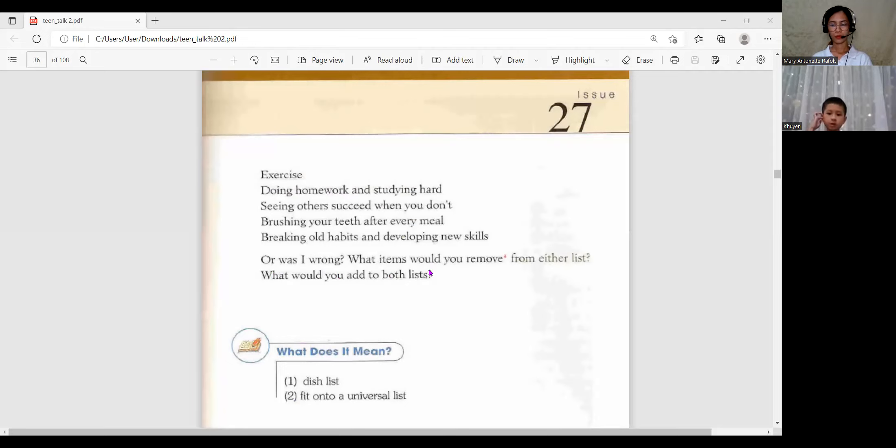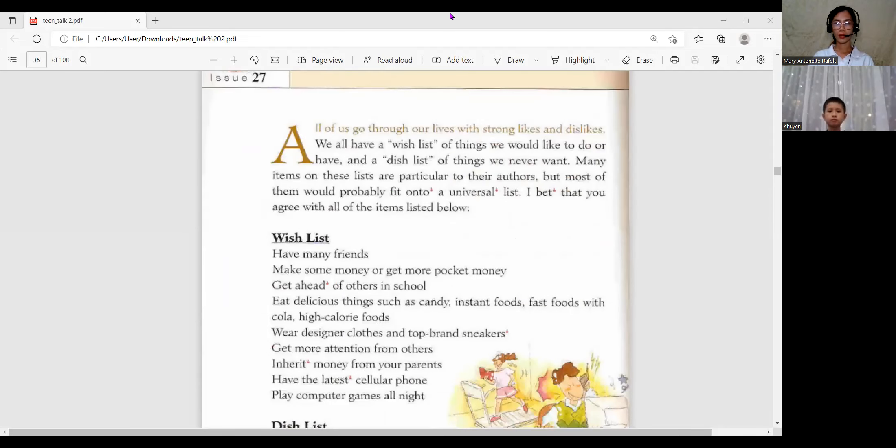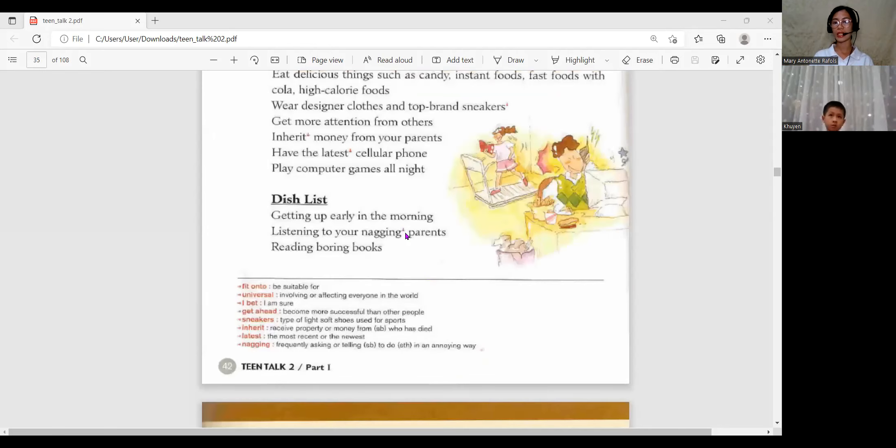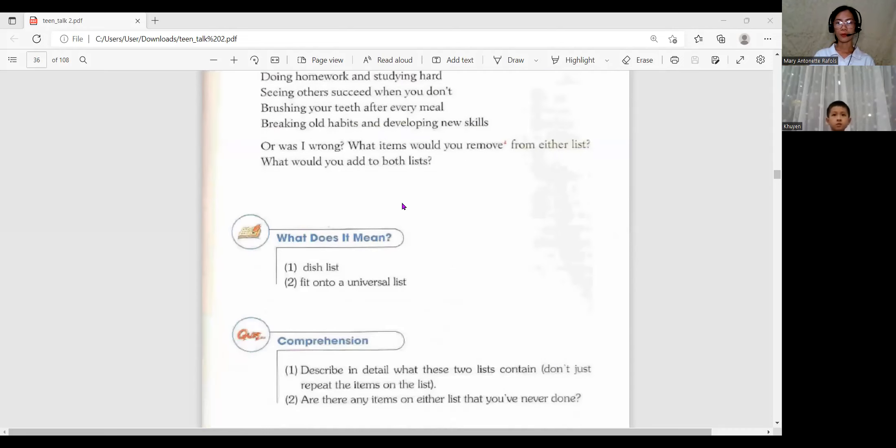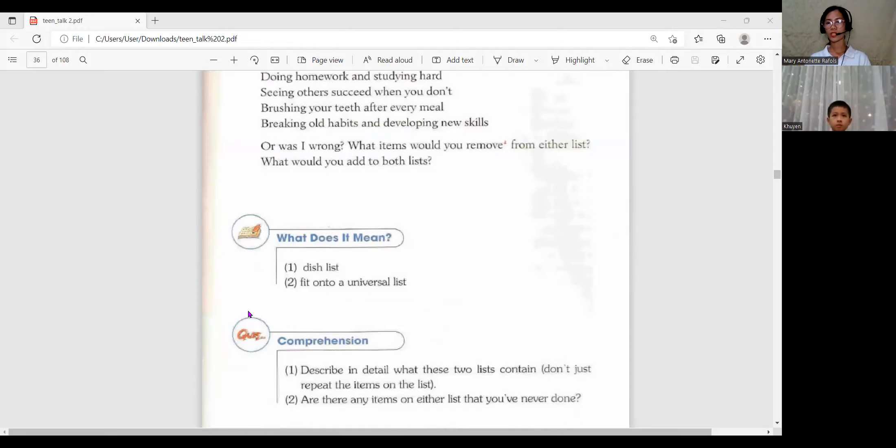What items would you remove from these lists? What would you add to both lists? Okay, let's talk about wish list and dislike list. Wish list is the things that we want or the things that we like to do. And dislike list, it is the things that we never want. So that is the dislike list. And there are examples from the author. And he or she has a dislike list, the things that he doesn't want or he likes. Now let's go to answering some questions.